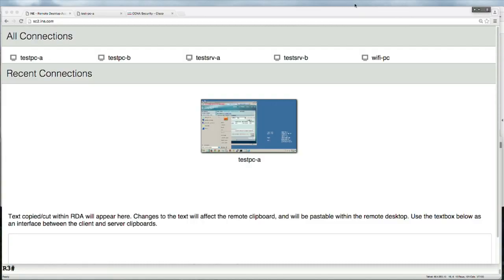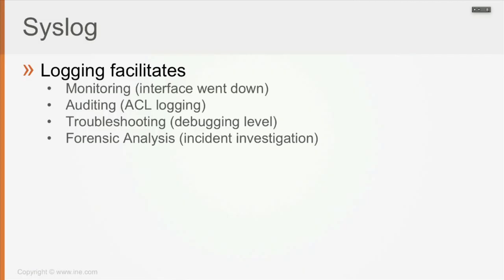First we have syslog, which is basically logging, nothing else. Logging is used for a couple of reasons. It is used to monitor the network — like when an interface went down on a specific device, you would want to be alerted on a specific platform so you might want to take action: either manual action, like calling your ISP that a link went down, or maybe an automatic action like automatically running a script to reconfigure routing.